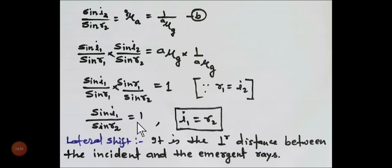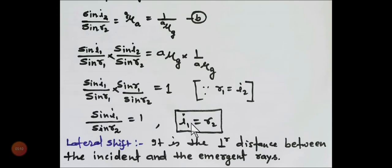And it remains sin i1 divided by sin r2, which is equal to 1. So you can write i1 divided by r2, that will equal to 1. So we can write i1 is equal to r2.